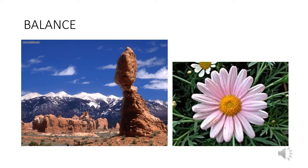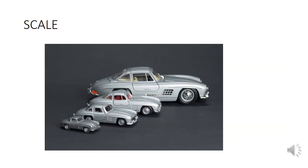Ripples and waves are a good and classic example for rhythm and movement. The rock formation on the left is a good example of balance. On the right side, the flower you see has balance in color. Scaled down examples of classic vintage cars are a common toy — this is how you can easily understand how scale operates.